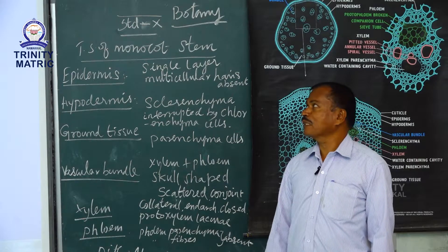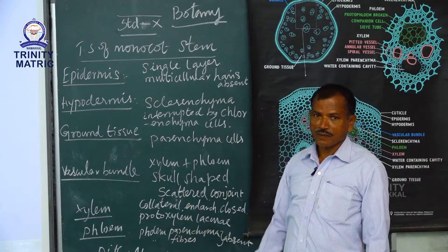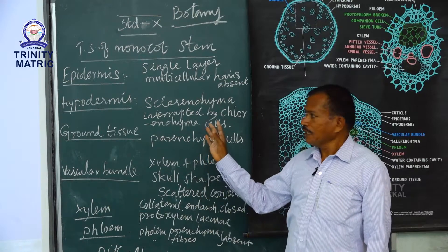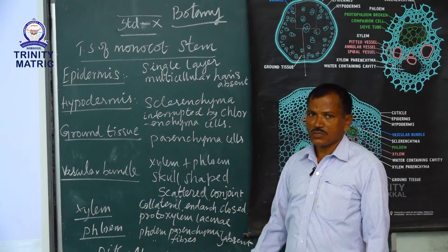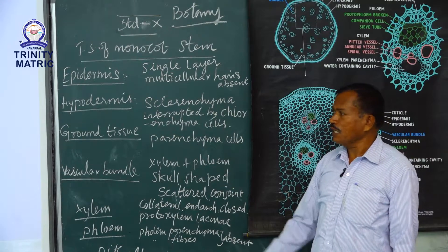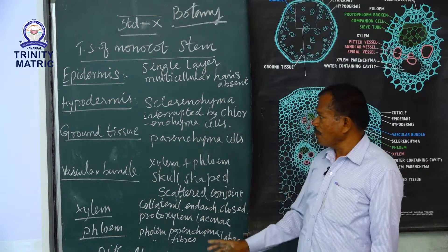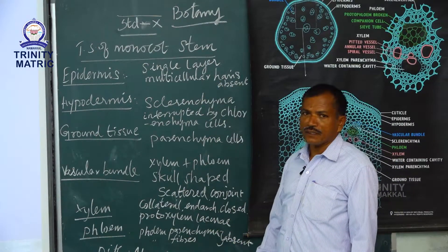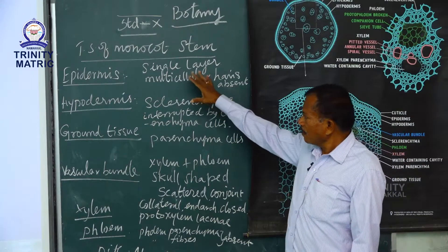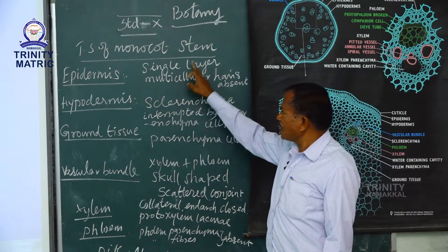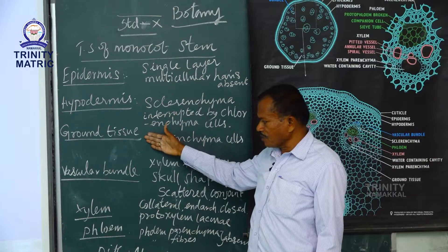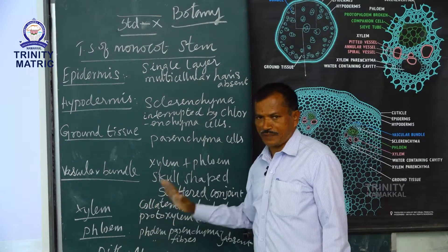Good afternoon everybody. Welcome back to 10th standard botany class. The title is Anatomy. In the last three classes we saw the internal structure of a stem and a root. Today we will see the transverse section (TS) of a monocot stem — example: maize. The parts we will look at are epidermis, hypodermis, ground tissue, vascular bundle, xylem, phloem, and pith.